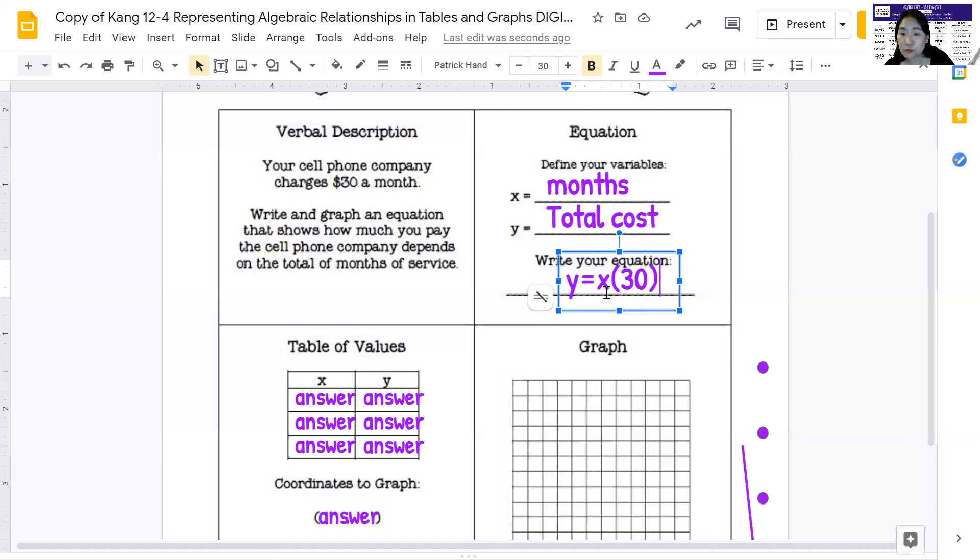But what if you use it for two months? So if X is two, two times 30 is $60, your total cost is 60, so on and so forth. Now, but I don't like the way I wrote this. Instead of writing X times 30, I actually like to write the number first. So I'm going to write 30 times X, but they mean the same thing.